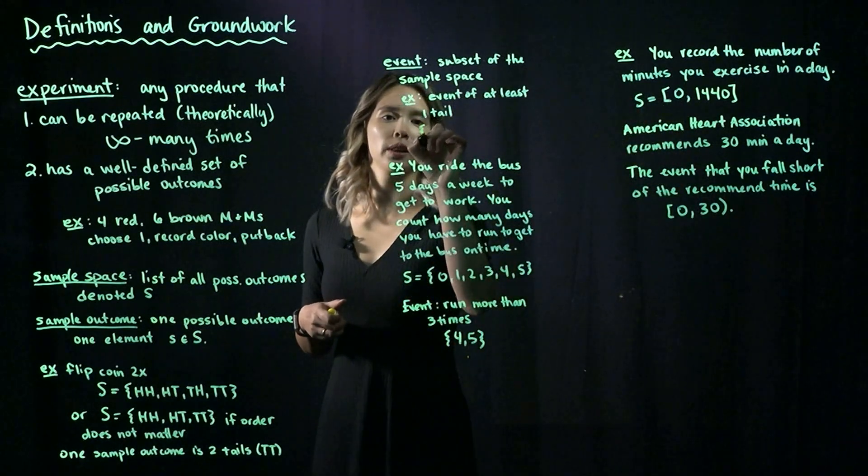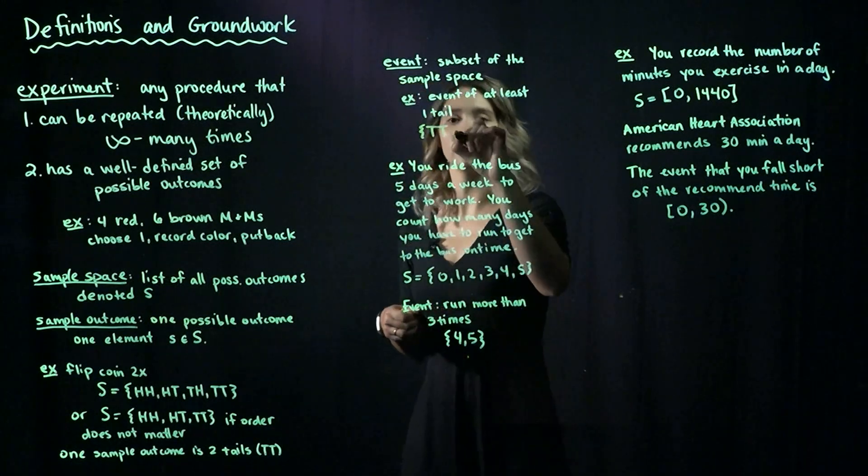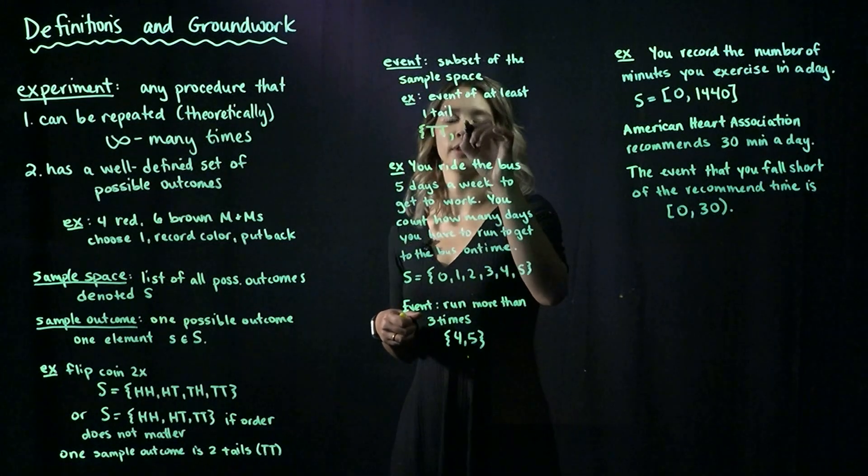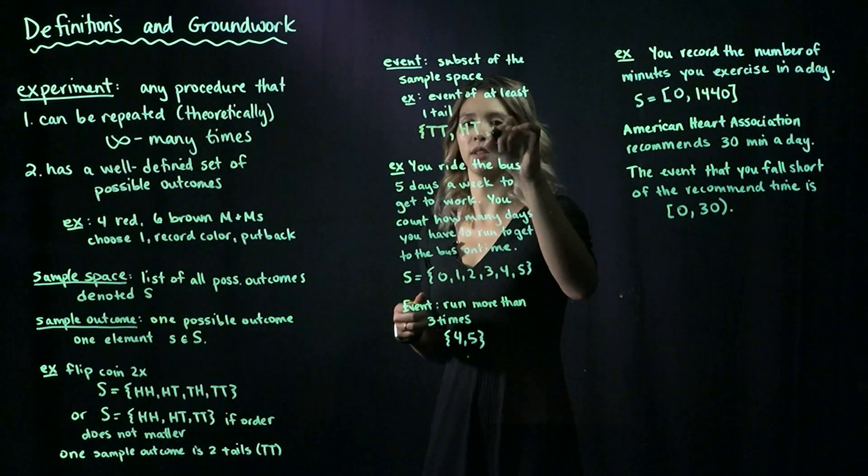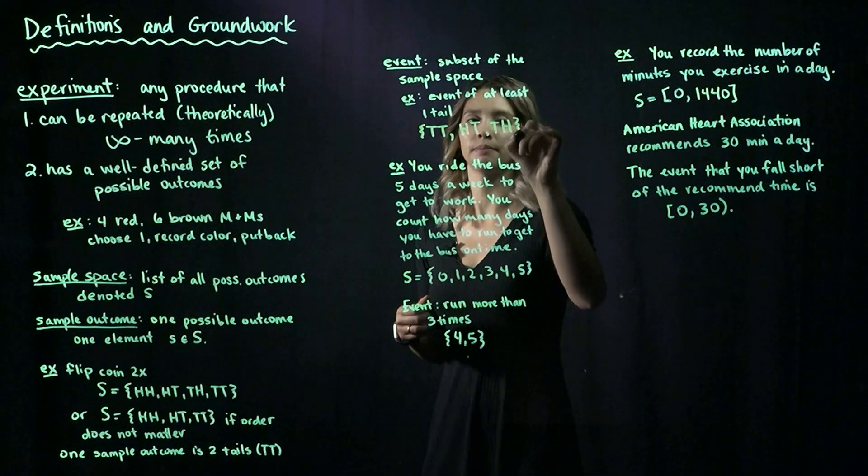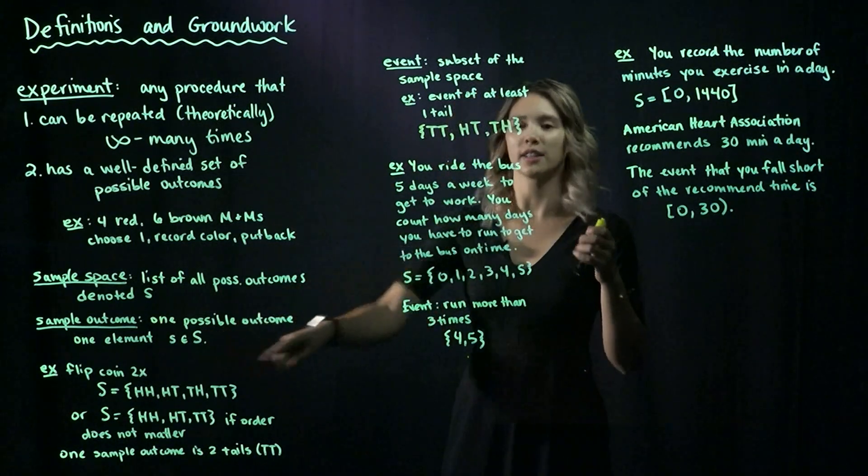So then that set would look like we could have two tails or we could have one tail. And if the order matters, then we should also have this in our set. So this is a subset of our sample space S.